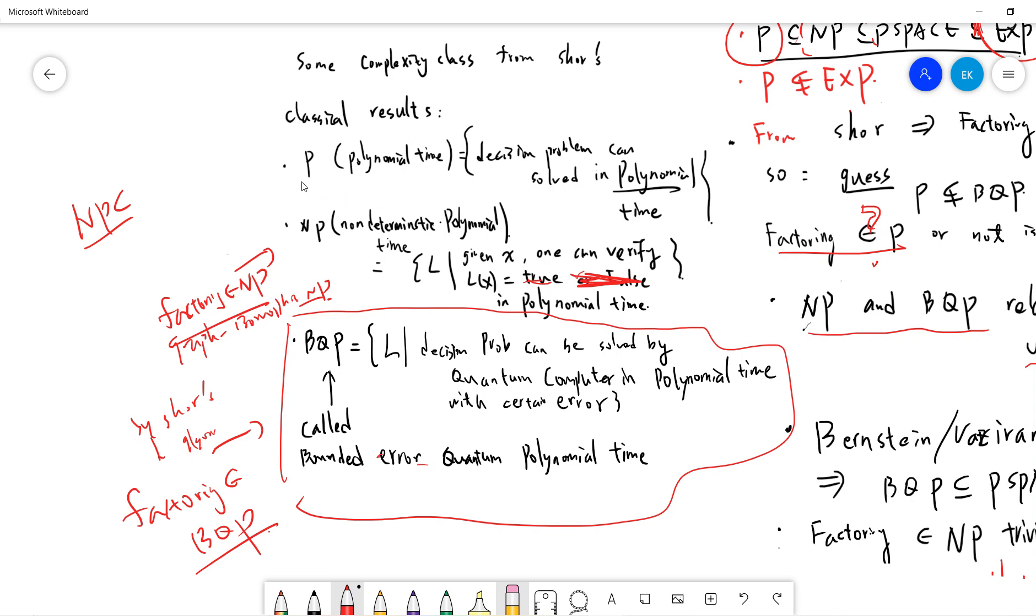Classical results is that people define P, called polynomial time, is a set of decision problems which can be solved in polynomial time by a classical computer or a simple Turing machine.